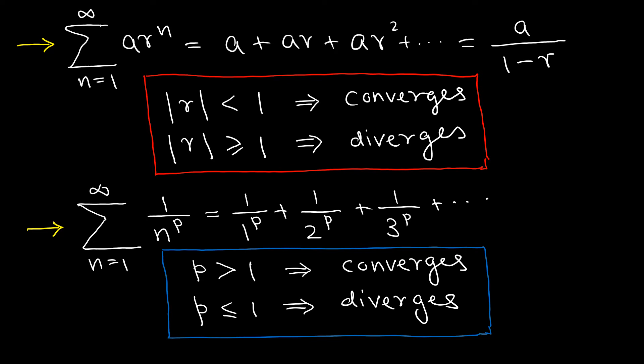One of my students asked the other day why the geometric series test and the p-series test look completely different from each other. For example, we know that the geometric series converges when r is less than 1, and the p-series converges when p is greater than 1 — exactly opposite to each other. The whole purpose of this short video is to explain the reason behind that.